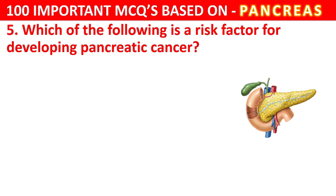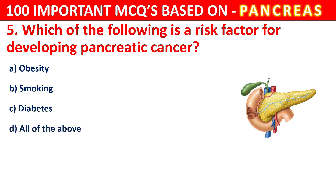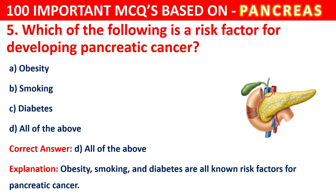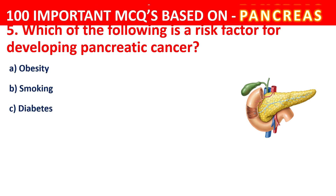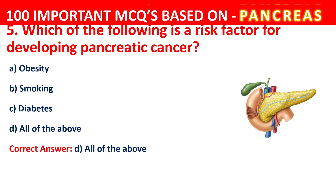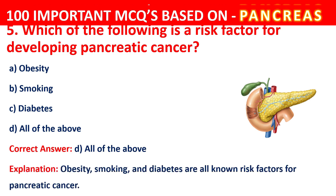Question 5. Which of the following is a risk factor for developing pancreatic cancer? Your options are Obesity, Smoking, Diabetes, or All of the above. The correct answer is D, that is All of the above. Obesity, smoking, and diabetes are known risk factors for pancreatic cancer.